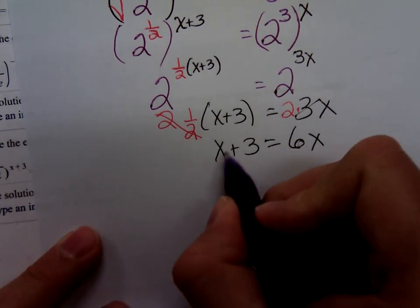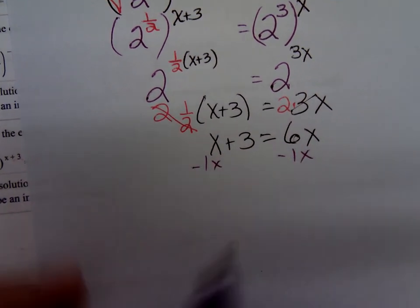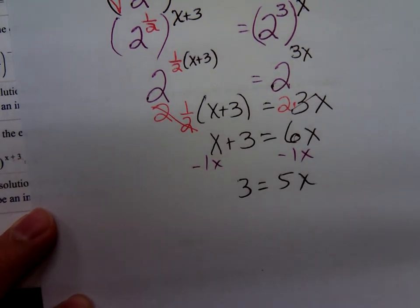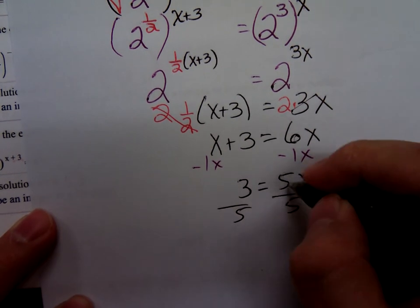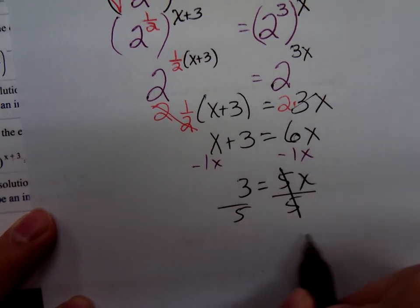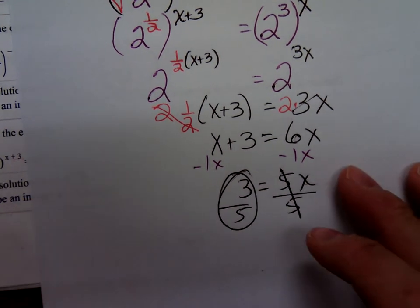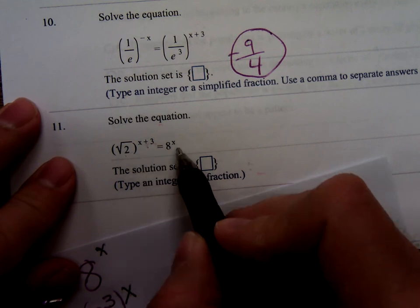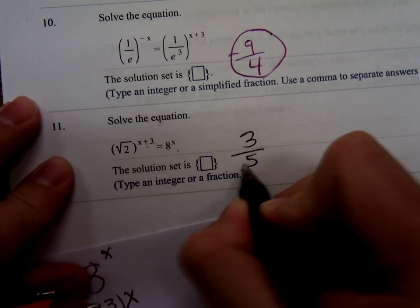I think what I'm going to do is just subtract 1x from both sides. So, we just have a 3 equals 5x. Divide both sides by 5. So, the solution set there would be 3 over 5.